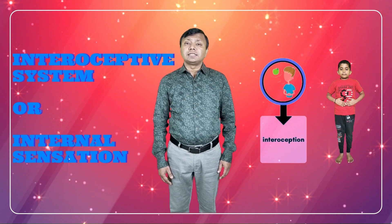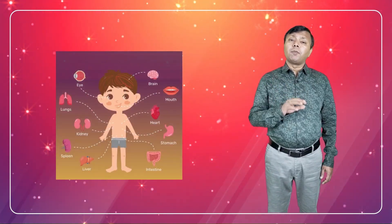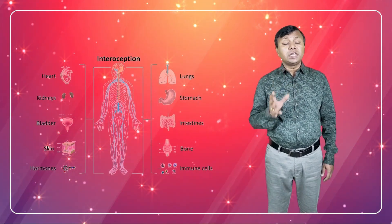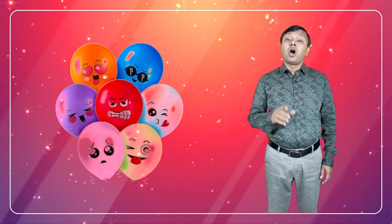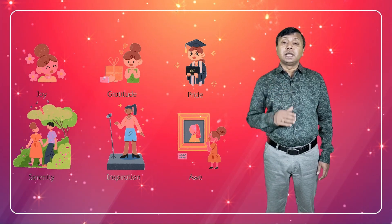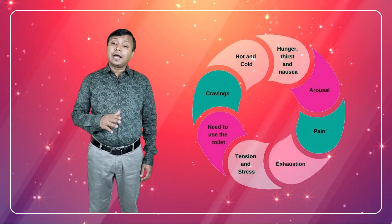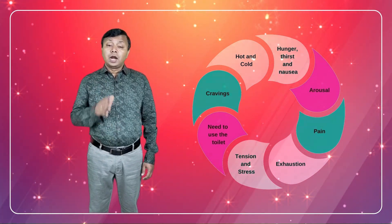Interoceptive system, or internal sensation. With receptors in each of our internal organs, our interoceptive system provides information about our bodily functions and is linked with how we feel emotions. It gives us the ability to feel what is happening inside our body, plays a role in influencing emotions and sense of well-being, and detects changes in our internal state. These include hunger, body temperature, heart and breathing rates, social touch, muscle tension, nausea, sleepiness and more. Some of the issues related to this system are: difficulty with toileting, bed wetting or accidents; and difficulty regulating emotions and feelings.